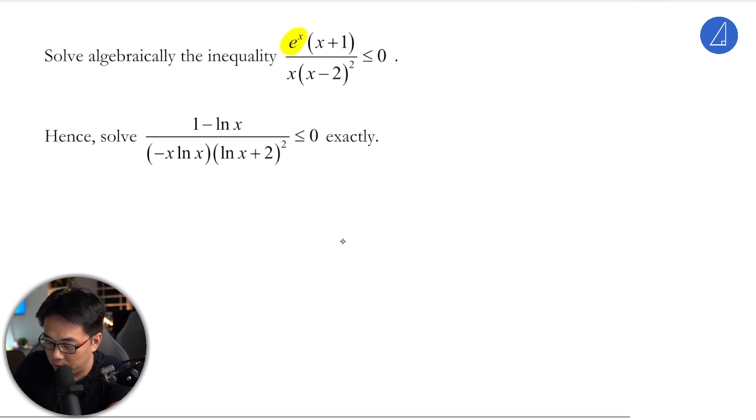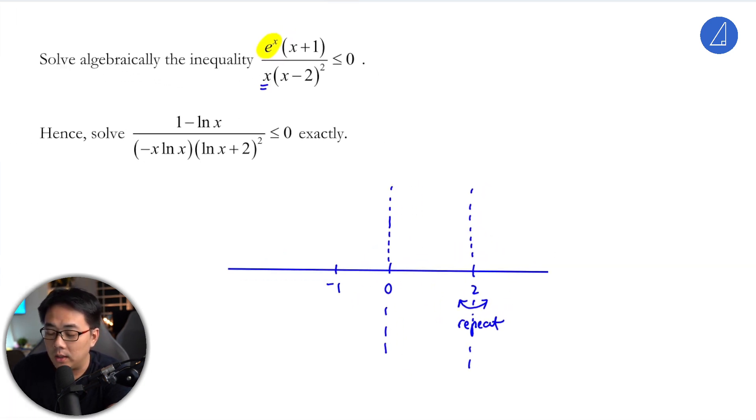When you do the test point method, what you need to do is draw all the roots. We have this will not have any root on the number line, then we have negative one here, then zero, and this is two. Remember that this is a repeated root, so the sign around here will just be repeated. The roots from denominator would yield a vertical asymptote, so we draw this out.